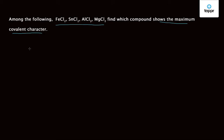In FeCl2, Fe has an oxidation state of plus 2. Similarly in SnCl2, the oxidation state of Sn is plus 2. In AlCl3, the oxidation state of aluminum is plus 3, and in MgCl2, the oxidation state of Mg is plus 2.